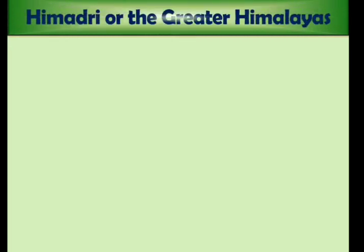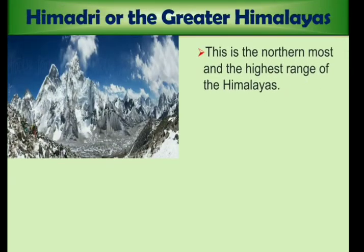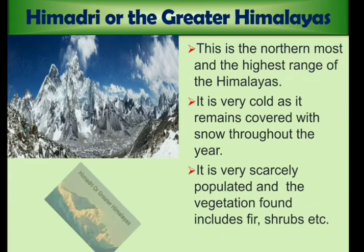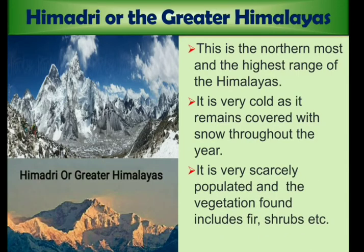The Greater Himalayas, or Himadri, is the northernmost and the highest range of the Himalayas. It is very cold as it remains covered with snow throughout the year. It is very scarcely populated and the vegetation found includes fir, shrubs, etc.